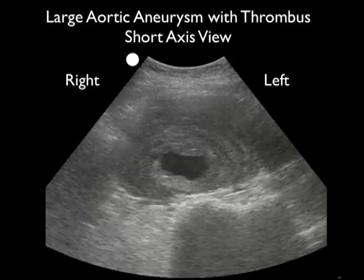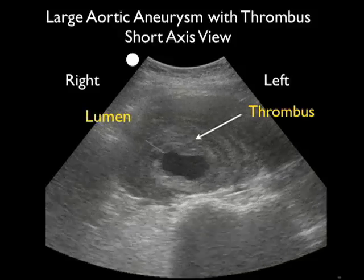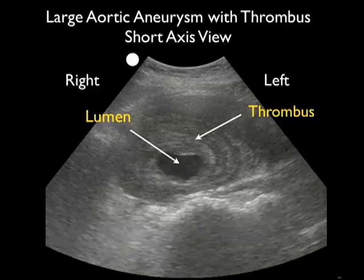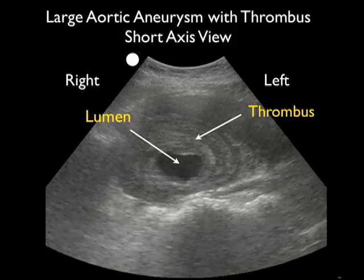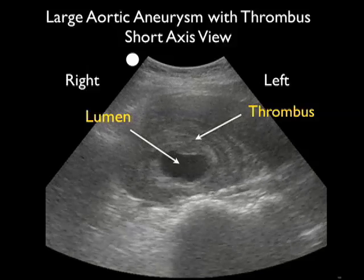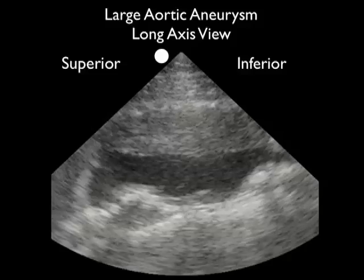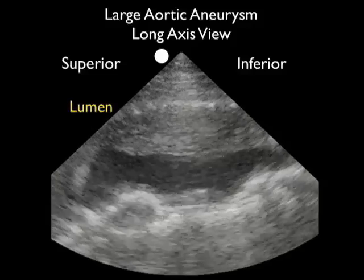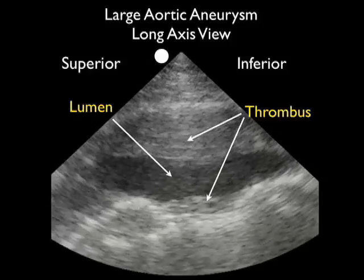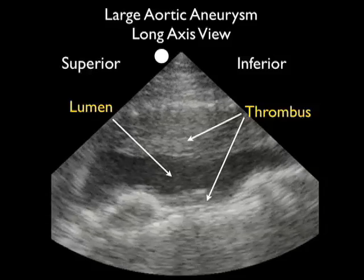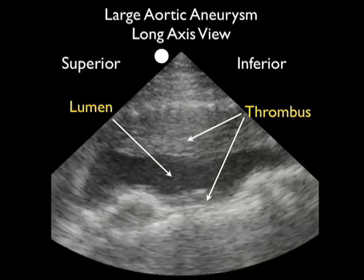This video clip shows a very interesting AAA with multiple onion skin layers of thrombus surrounding a very small lumen towards the middle — notice that we could vastly underestimate the true dimensions if all we included was the lumen. We see a very large burden of clot surrounding the lumen circumferentially in short axis. Positioning the probe in long axis orientation reveals what I like to call the subway sandwich sign: the lumen makes up the filling, while the anterior and posterior burden of clot forms the loaves of bread circumferentially surrounding it.